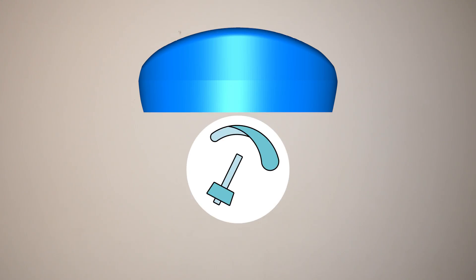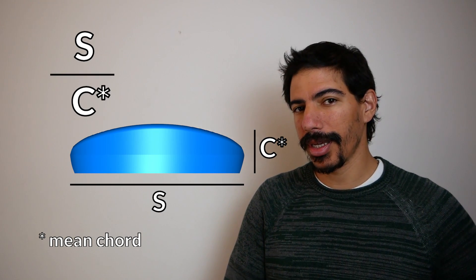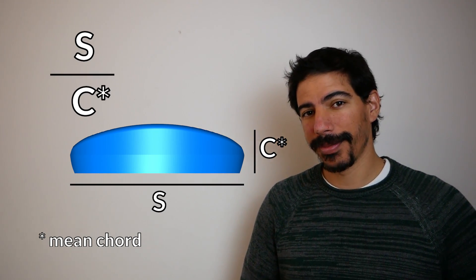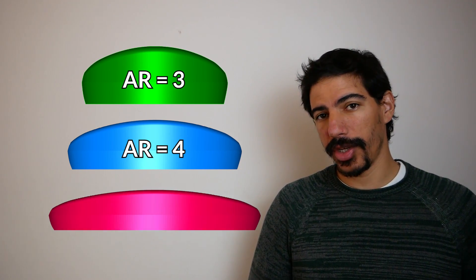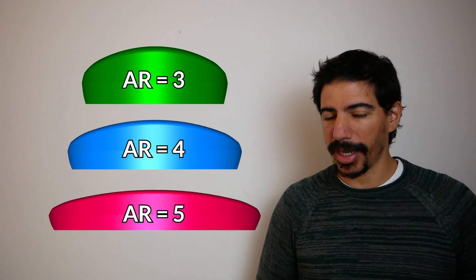This week on BASICS we're talking about aspect ratio. A ratio is just a division between two numbers, and the aspect ratio of a wing is the wingspan divided by the chord. Typically in paragliding, safe wings have a low aspect ratio and performance wings have a high aspect ratio.